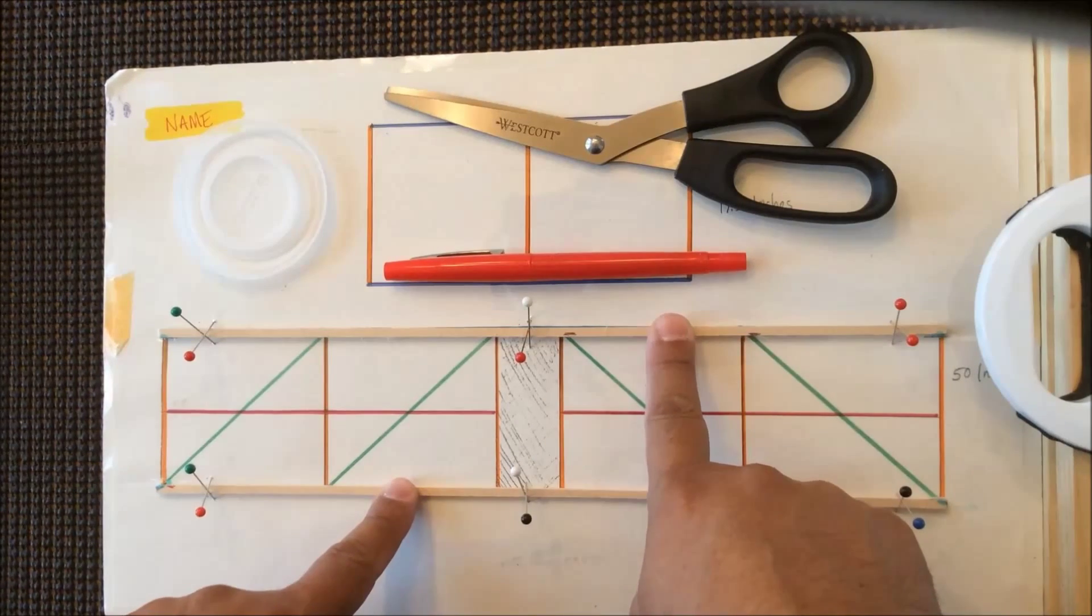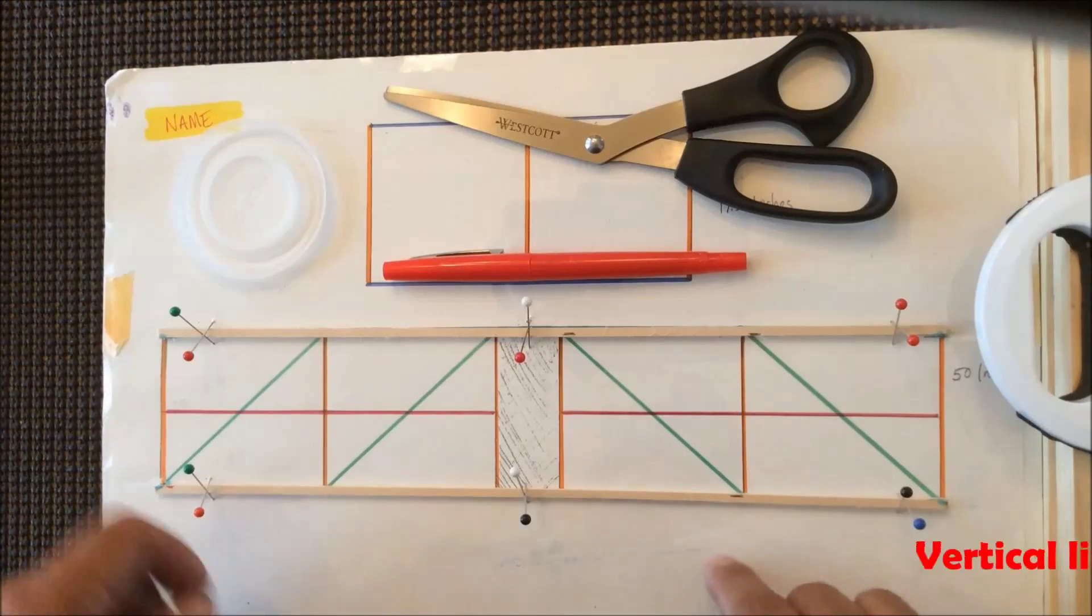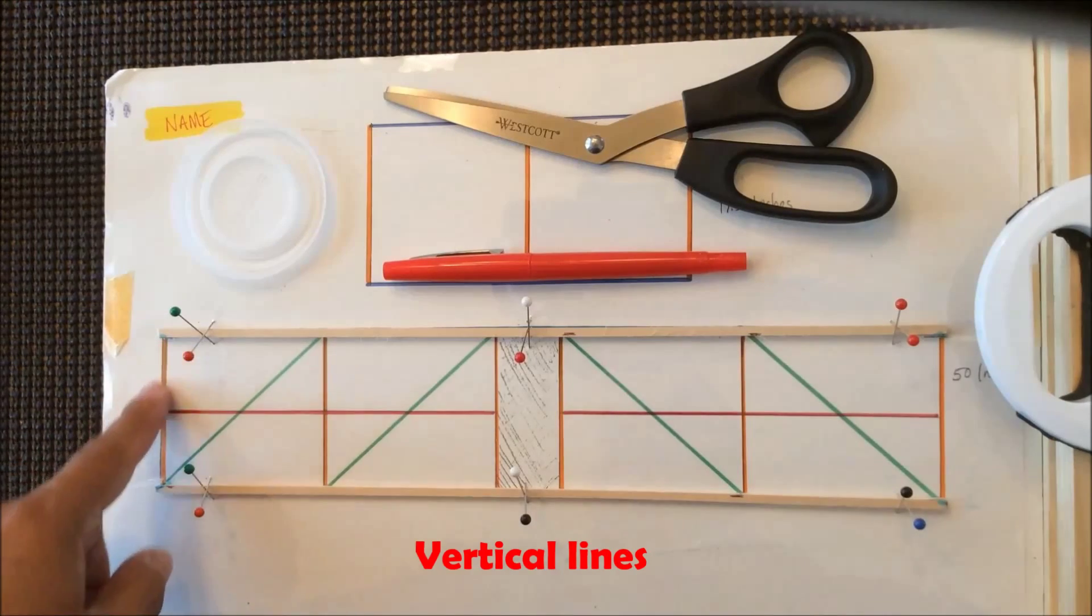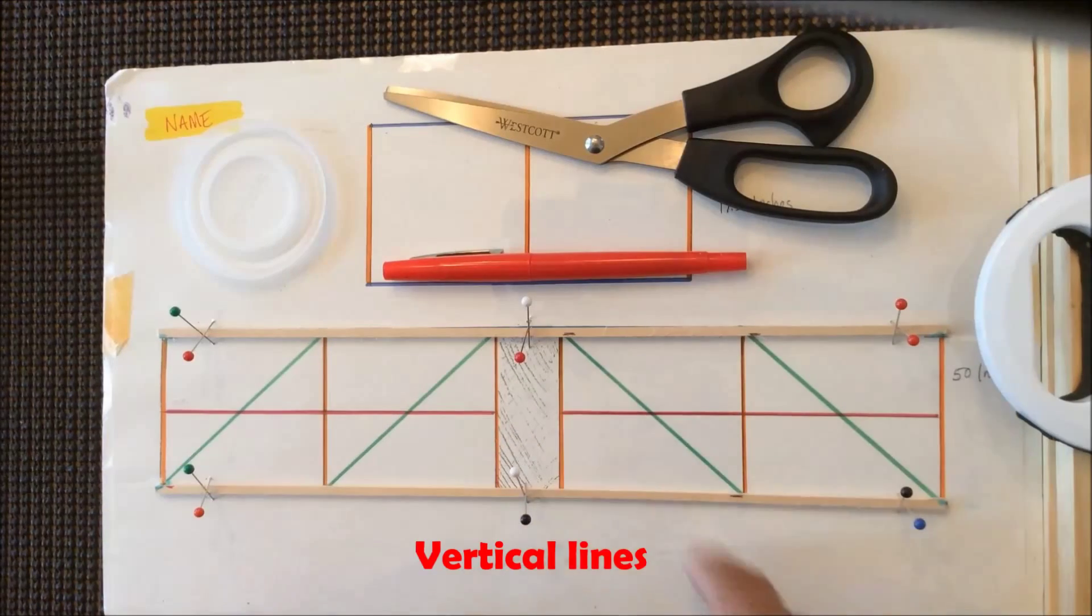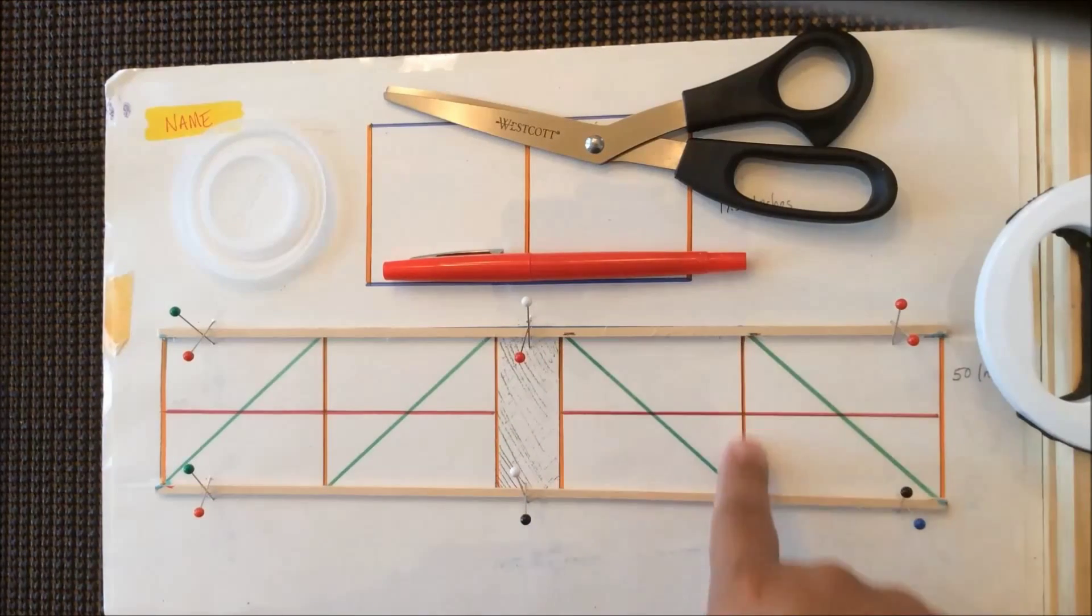The next type of line we want to do are vertical lines. So the vertical lines would consist of these orange lines right here. All of these vertical lines, notice there are six total, three on each side of our opening, and all six of those lines should be the same length.